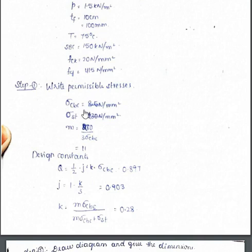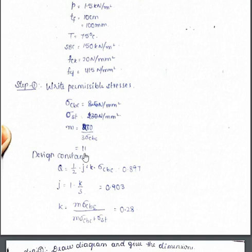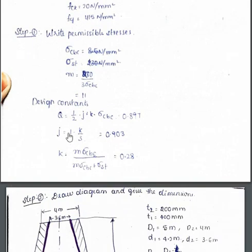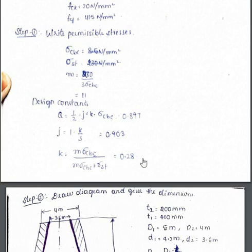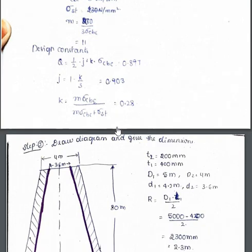In Step 1 we write the permissible stresses. Sigma CBC is 8.5 Newton per mm square, Sigma ST is 230 Newton per mm square. These are the correct values. M, the modular ratio, is given by 280 divided by 3 times Sigma CBC — all values taken from IS 456 according to the grade of steel and concrete. M value is 11. The design constant Q — which is half of J times K times Sigma CBC — has a value of 0.87. From these we can find all the values.